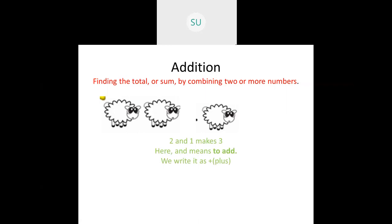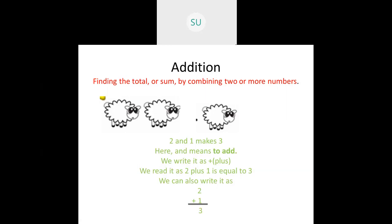We write addition as plus - this is the plus sign, and it is read as 'plus', P-L-U-S. So it is 2 plus 1, read as 2 plus 1 is equal to 3. We can also write it vertically: write 2, then below 2 write plus 1, then 3. So 2 plus 1 is equal to 3.